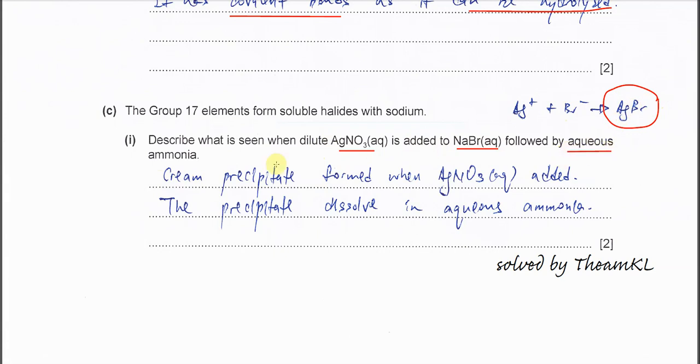And followed by ammonia solution. The precipitate dissolves in the aqueous ammonia, or you can say that the precipitate is partially dissolved in aqueous ammonia. That one is for the silver bromide.